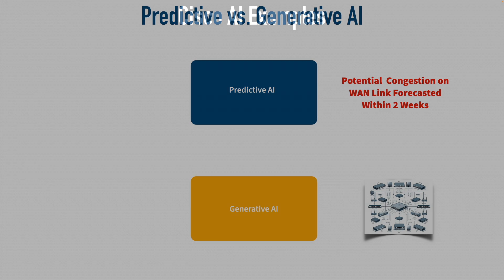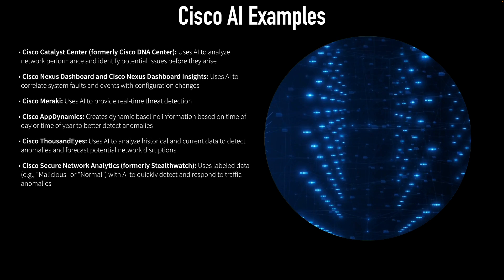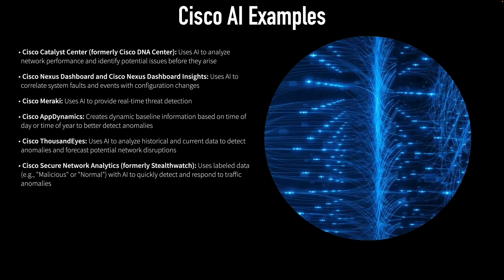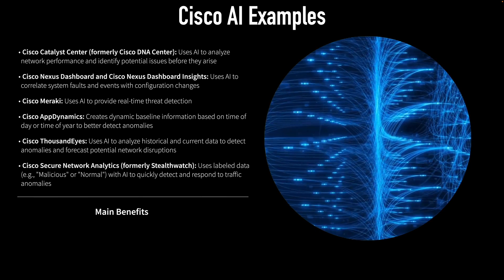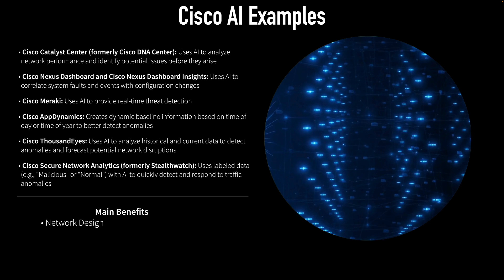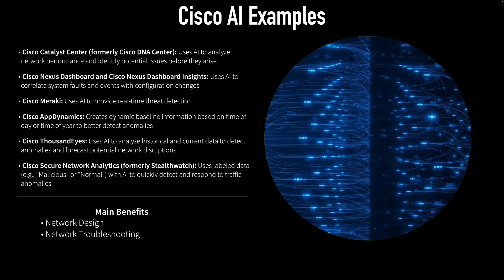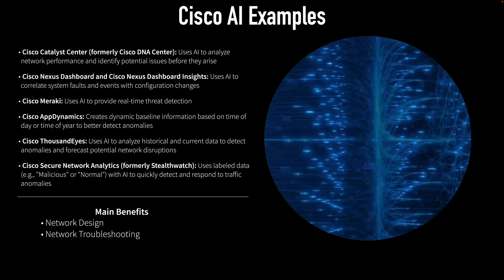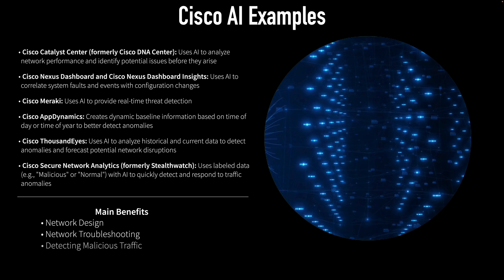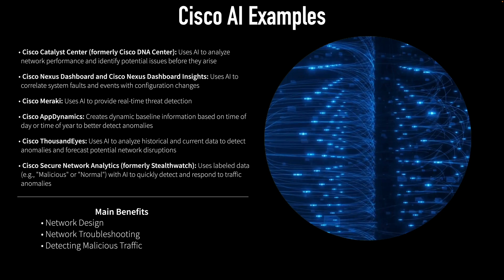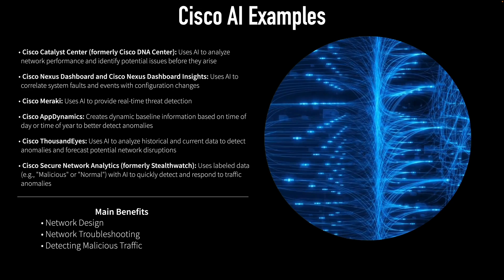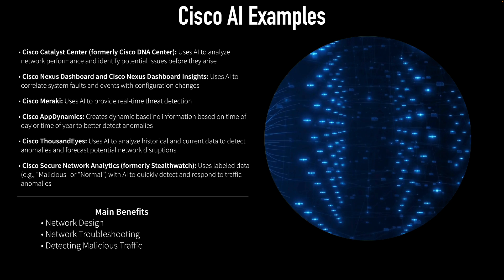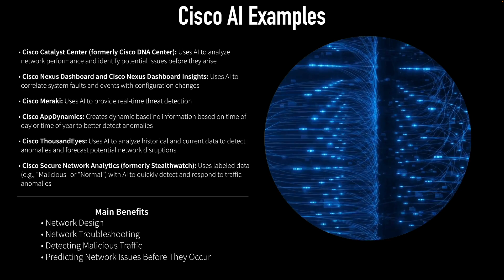Cisco has already integrated AI into several of their product offerings — you can see the list on screen and pause the video to read through those bullets. But I want to give you the big takeaway: the four main benefits of using AI in our network. We could use generative AI to help us with network design. We could do network troubleshooting, because if we have a model trained to recognize different symptoms of a problem, AI might identify the problem and give us a course of action to correct it. We could also use AI to detect malicious traffic — either based on training data with examples of malicious traffic, or based on raw data grouping normal traffic patterns against anomalous ones. And AI can not only help us respond to an issue, it can help us be proactive and predict a potential issue before it ever occurs.